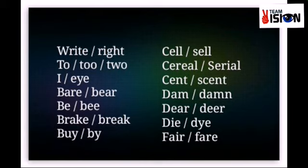The next words are CEREAL and SERIAL. The first word is CEREAL, spelling C-E-R-E-A-L. Cereal means grain products — things like breakfast cereal. The second word is SERIAL, spelling S-E-R-I-A-L. Serial means a serial number — an index number, like when we make an index.